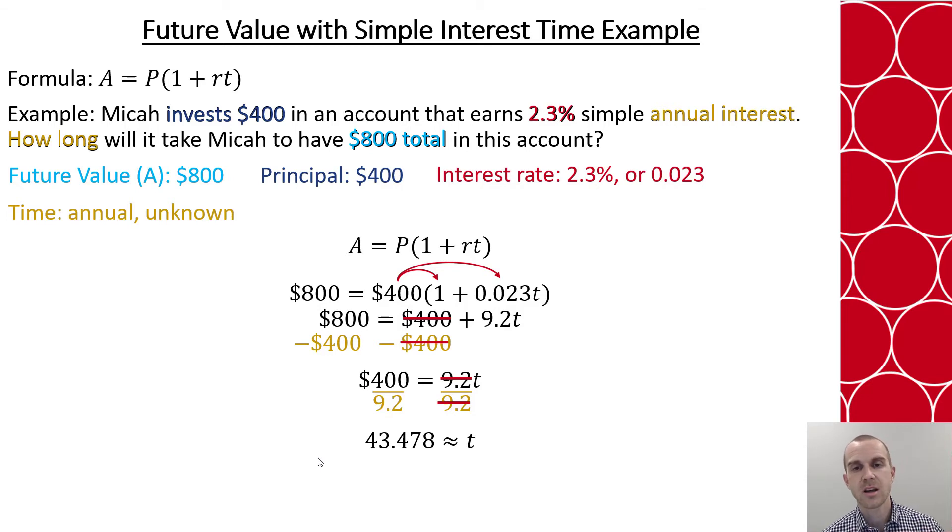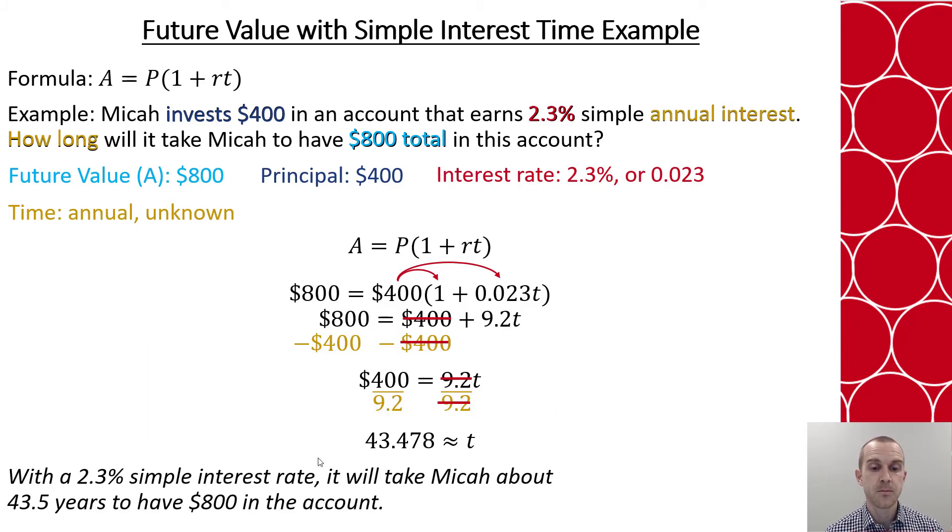But likely we're going to talk about years either in whole years or in years up to tenths. So we could say that it will take Micah at a 2.3% simple interest rate about 43 and a half years to have $800 in the account.